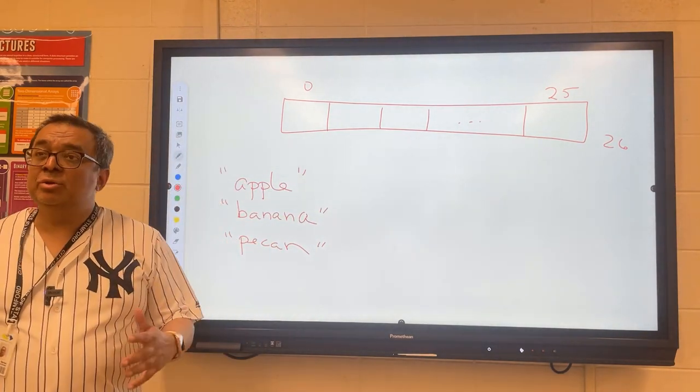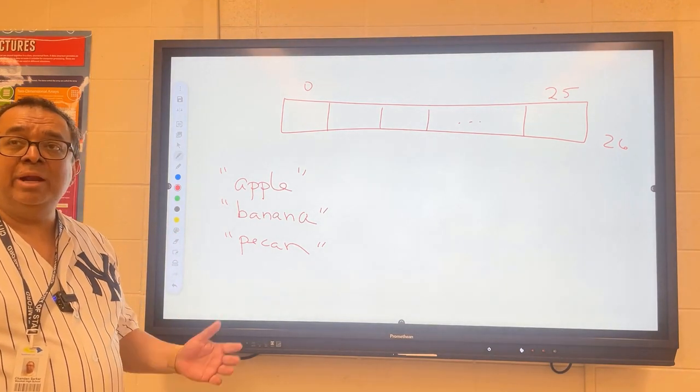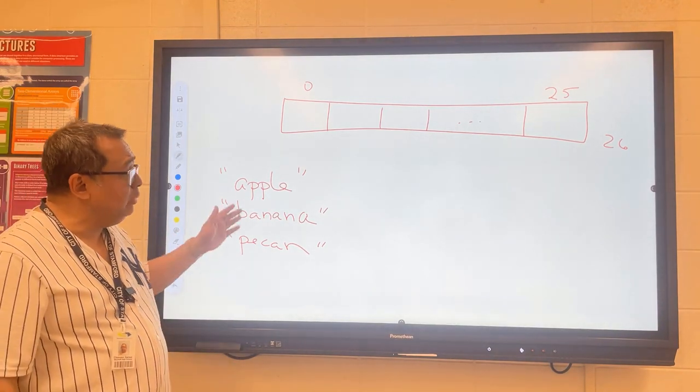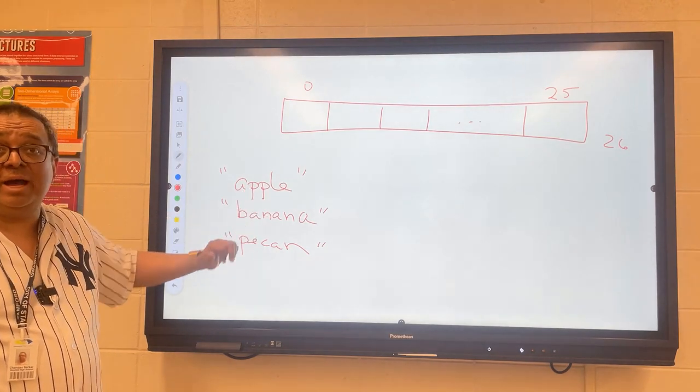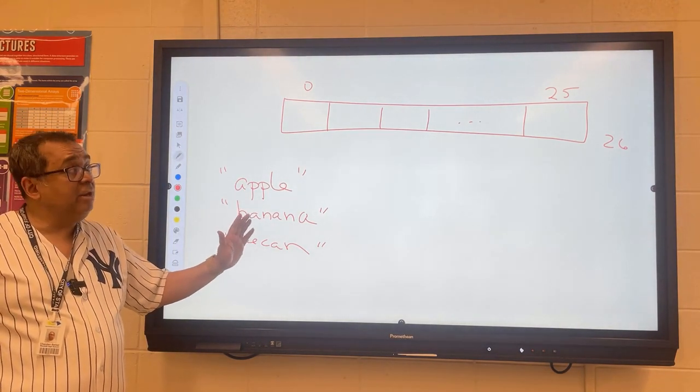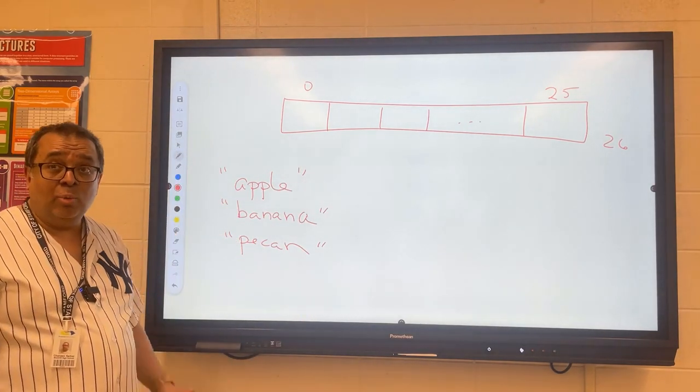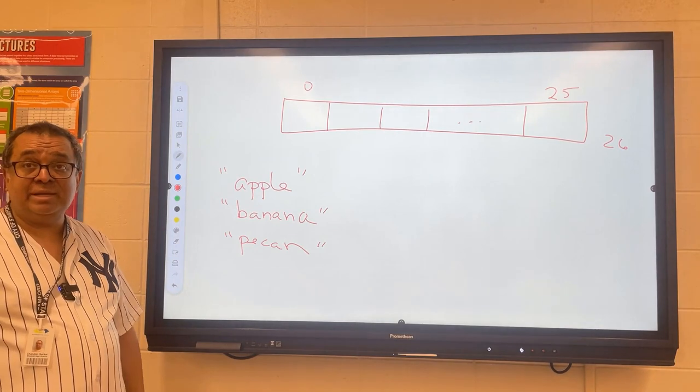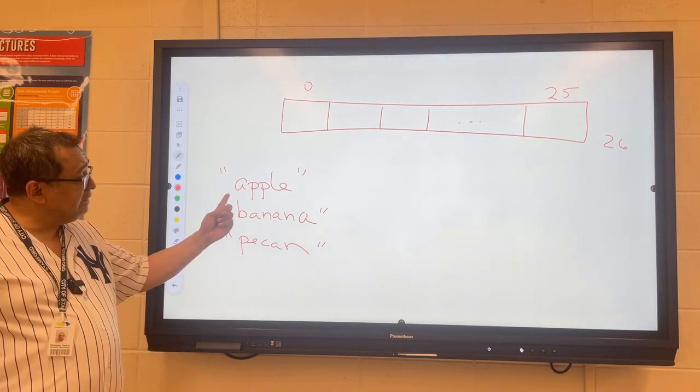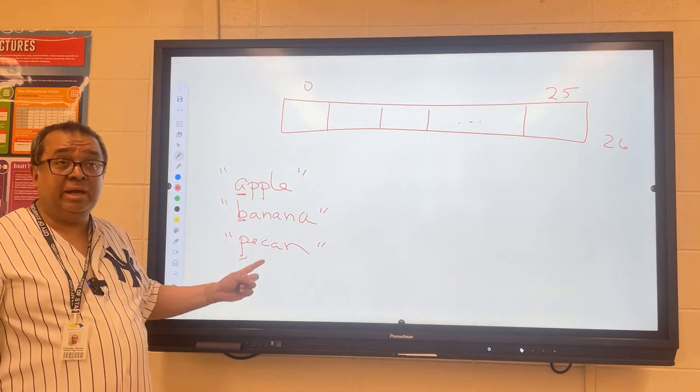What we want to do, and the whole idea behind hashing, is that we want to be more sophisticated in the way we choose where to store the items. We want something about the items to indicate what the index of storage should be. One simple way we could do that is to use the first letter to generate an index and store the words accordingly.